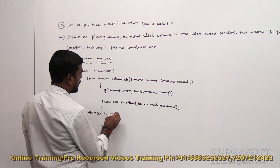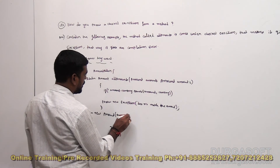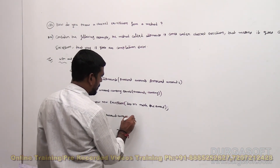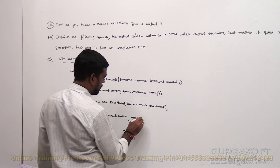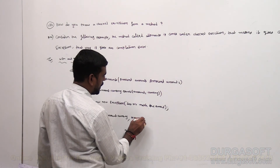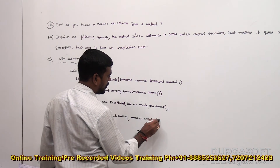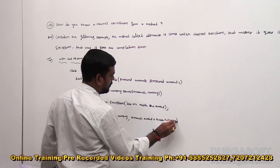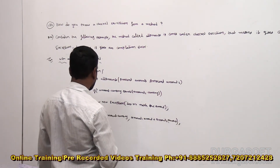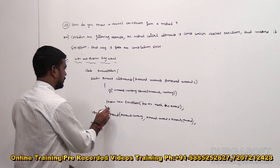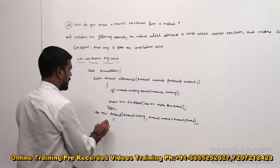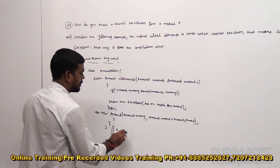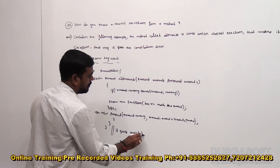Here what we have to take: amount one dot currency, comma, amount one dot amount plus amount two dot amount. Then close. Else, close the method, close the class. Yes, it gives the compilation error.